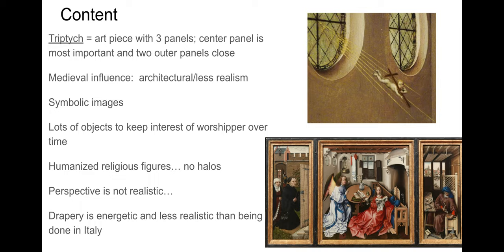The figures are very humanized — focusing on the human experience as we've seen in Greek art. Looking at the Virgin Mary and the angel in the center, neither has a halo, even though the angel does have wings. The absence of halos is a new and important change in religious art in the Renaissance. Perspective in Northern Renaissance art is not realistic — that's a carryover from the Middle Ages. The drapery is not realistic either; it's far more energetic, dramatic, and abstract compared to Italian work.